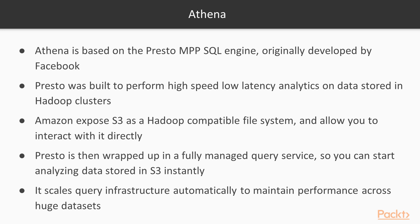What Amazon have done is expose S3 as a Hadoop-compatible file system and allow you to interact with it directly. You can still create an EMR cluster — Amazon's Elastic MapReduce technology, which is basically a one-click deploy of Hadoop — and point that at S3 to write MapReduce jobs directly. But what they've done with Athena is wrapped the Presto query engine into a fully managed query layer, so you can just start analyzing data in S3 immediately. Previously, if you wanted to use Presto, Spark SQL, Impala, or Drill, you'd have had to spin up an EMR cluster or roll your own Hadoop cluster on EC2, configure it all yourself, and then point it at S3 or load data onto local disks. With Athena, you just give Amazon the query and they execute it — a bit similar to Google's BigQuery. Amazon handles scaling of the query infrastructure automatically to maintain performance across near-infinite datasets.